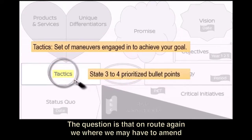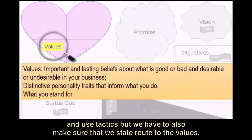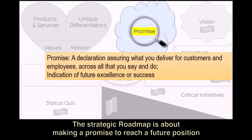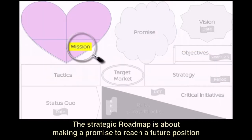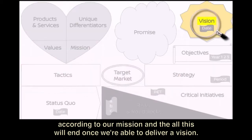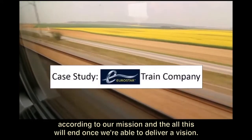On route we may have to amend and use tactics, but we also have to make sure that we stay true to the values. The strategic roadmap is about making a promise to reach a future position according to our mission, and all of this will conclude once we are able to deliver a vision.